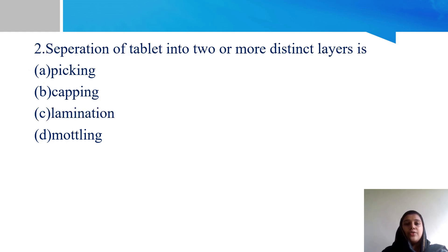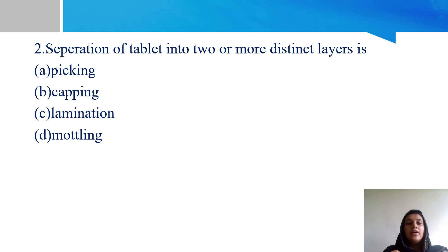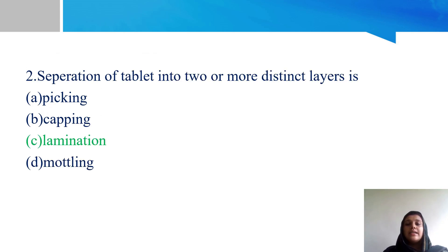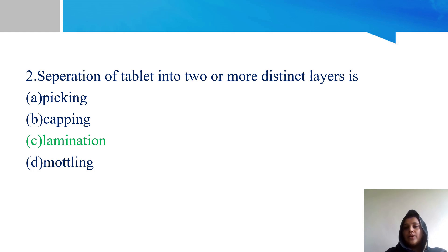Next question: separation of a tablet into two or more distinct layers. Options: A - picking, B - capping, C - lamination, and D - mottling. When we say tablet defects, if the tablet layers are separated, option C - lamination - is correct.